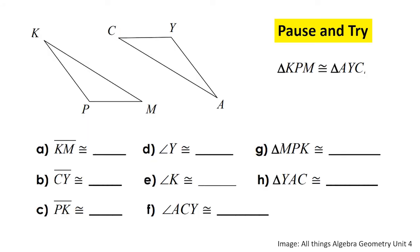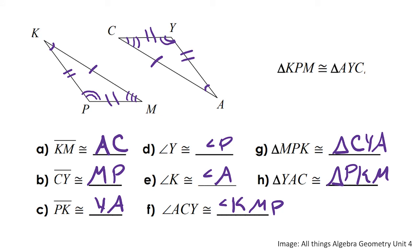Here's an example of two congruent triangles with a congruency statement. Fill in the blanks to match the corresponding sides and angles, and draw the congruence marks on the triangles. Go ahead and pause the video to try this on your own. Hopefully you got the answers correct — check them against the corresponding sides and angles.